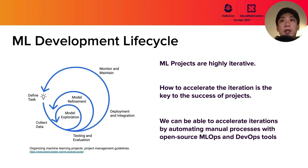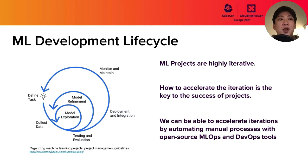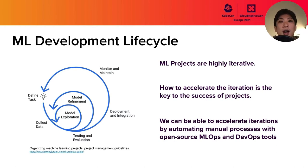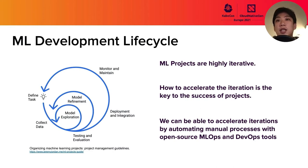Once we finish deploying the model to production, we can get actual feedback from the production cluster. And then we can go back to the collecting data phase and train the ML model with the actual feedback data. That iteration will keep going. As a machine learning platform perspective, how we can accelerate this iteration is the key to success of the ML project. We believe we can accelerate these iterations by automating manual processes with open-source ML Ops and DevOps tools.